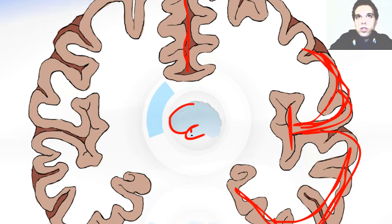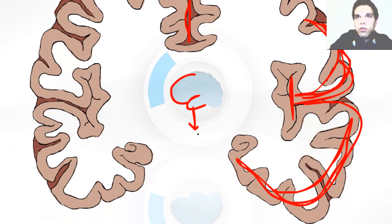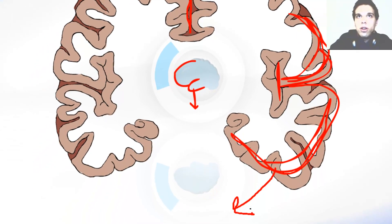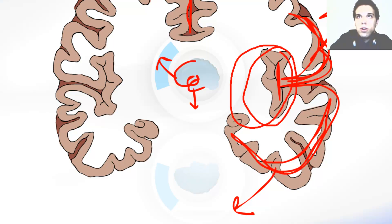If we could just pull this down — pull this temporal lobe down — or pull the frontal lobe a little bit up, we would be able to see the insula here. And that's exactly this part over here that is enclosed.